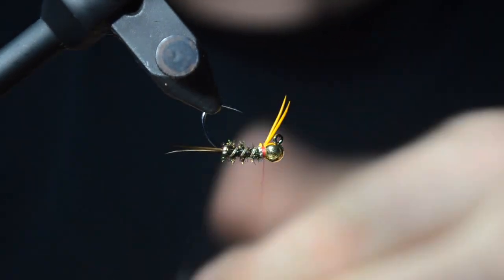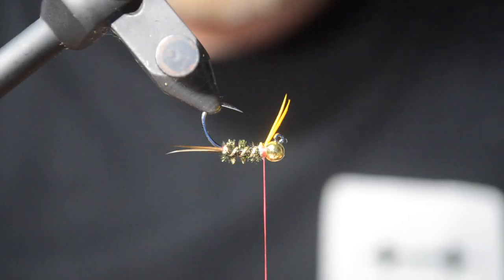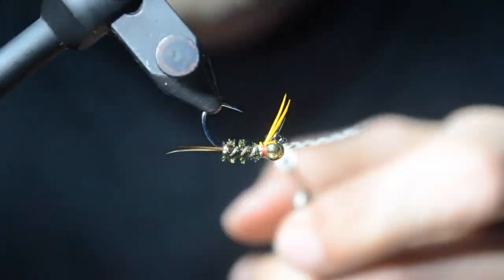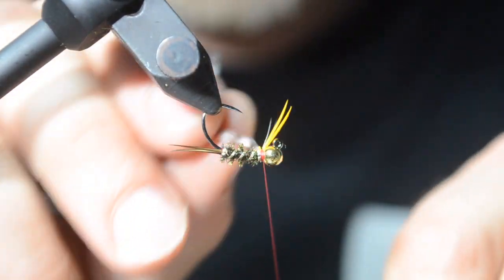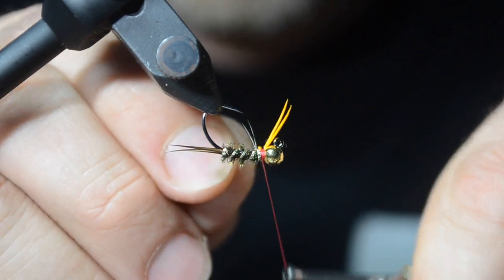Go ahead and put a half hitch. I'm using a goldish orange biats here. Not my number one choice, just for demonstration. But whites, the traditional color. But definitely experiment.